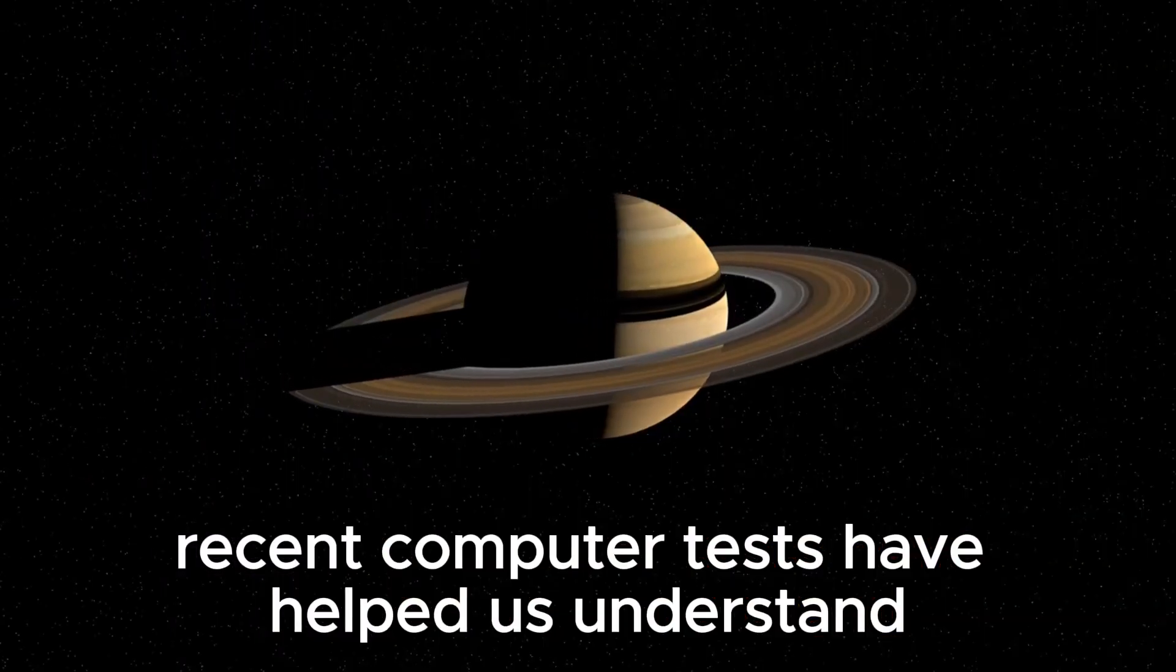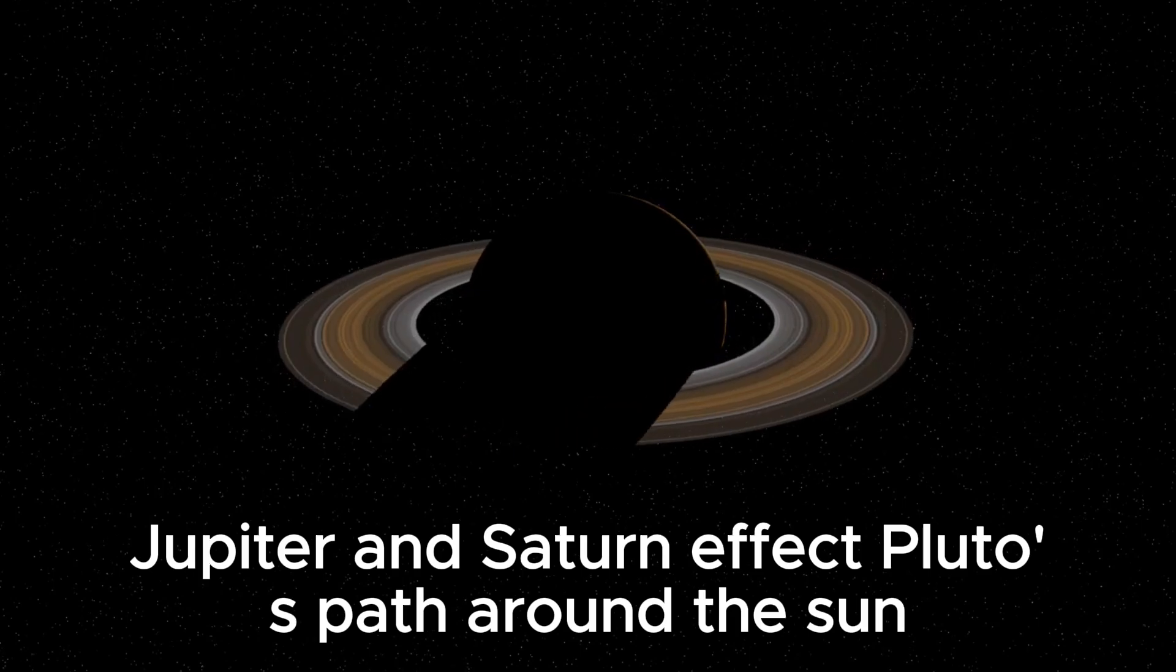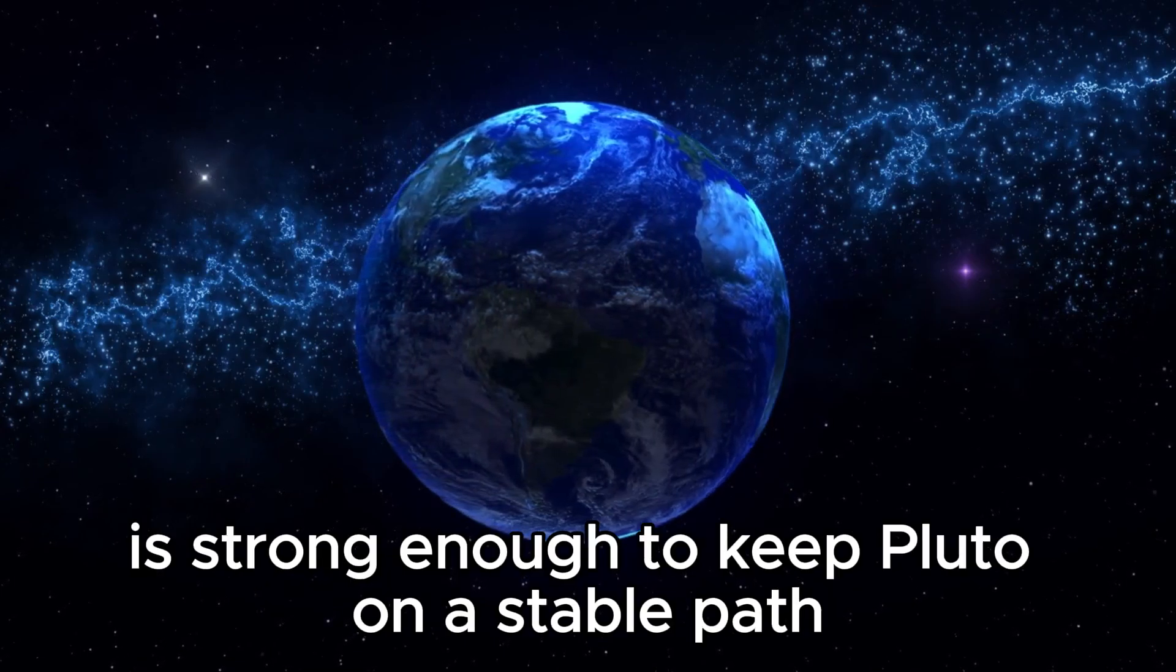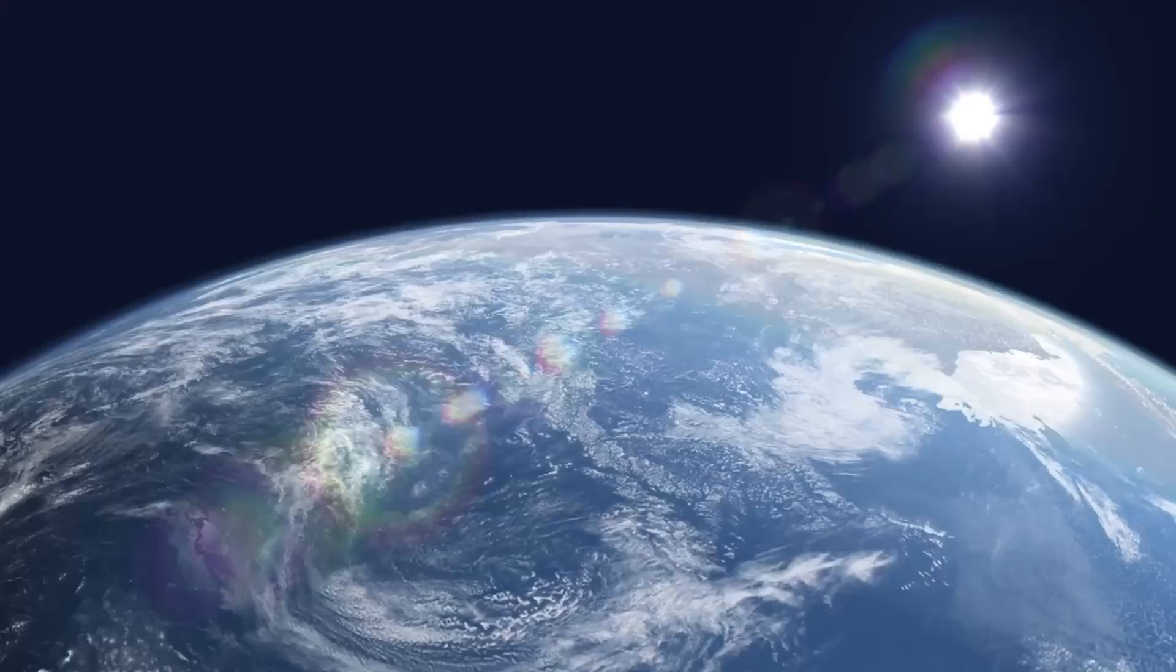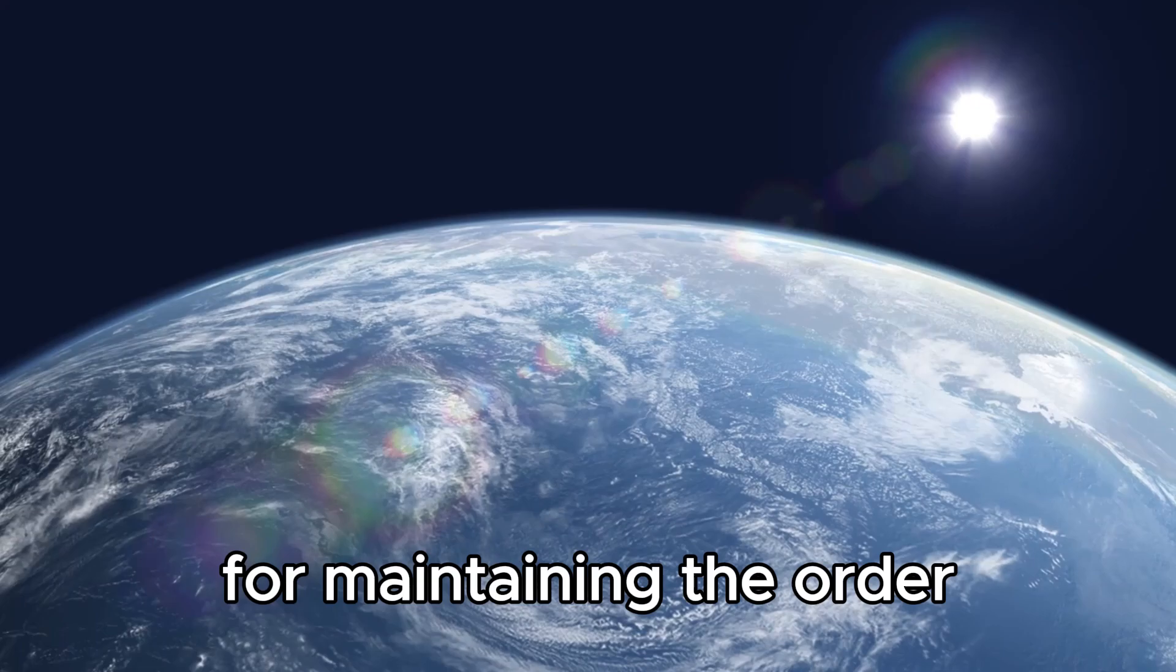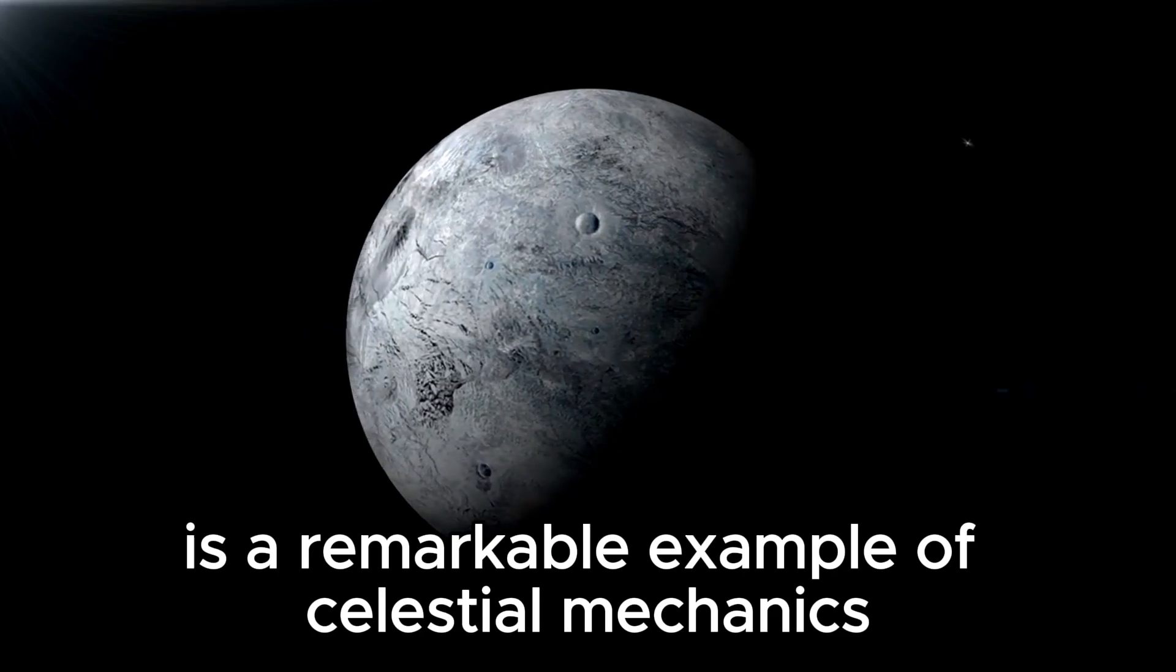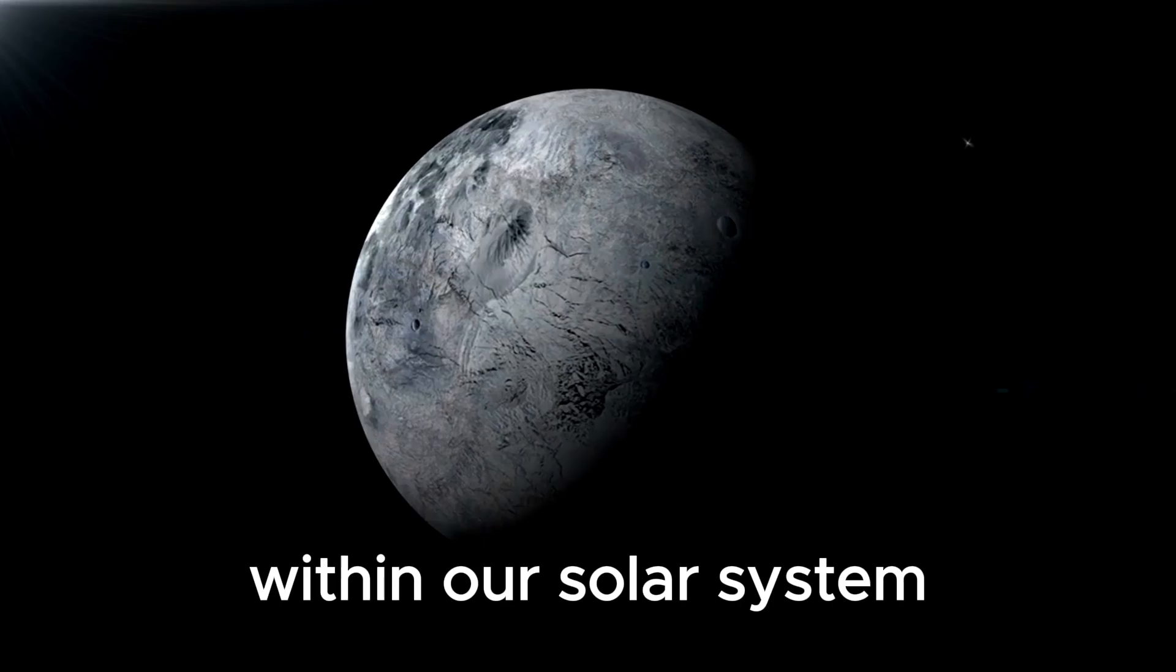Recent computer tests have helped us understand how the big planets like Neptune, Jupiter, and Saturn affect Pluto's path around the Sun. Jupiter's gravity alone is strong enough to keep Pluto on a stable path for a really long time, even billions of years. These phenomena are essential in the context of the universe for maintaining the order and predictability of space's movement. Pluto's orbit is a remarkable example of celestial mechanics at play, demonstrating both stability and chaos within our solar system.